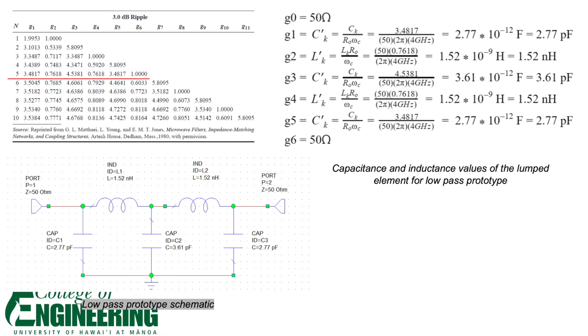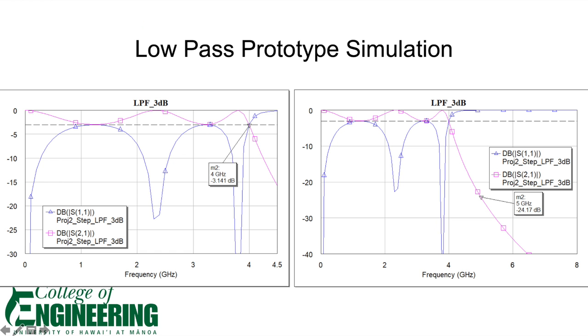The schematic was then designed in microwave office. The simulation of the low-pass prototype shows a 3dB ripple in the passband with a corner frequency of 4 gigahertz as expected. It also shows an attenuation of negative 24dB at 5 gigahertz.